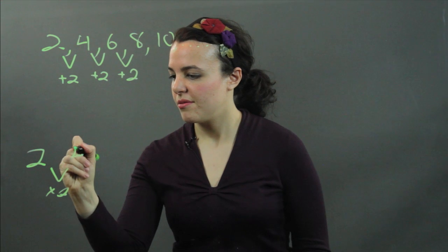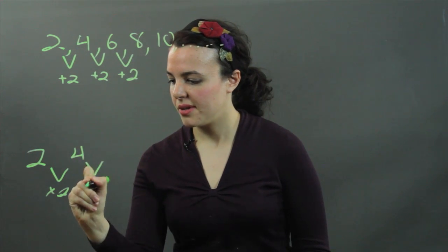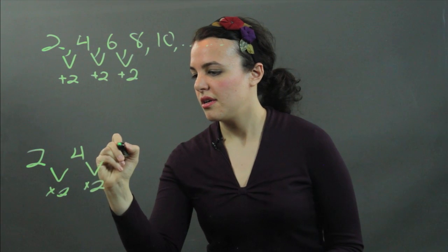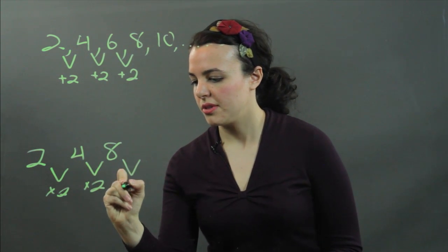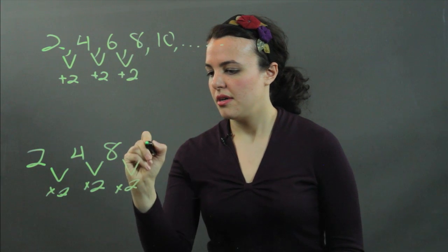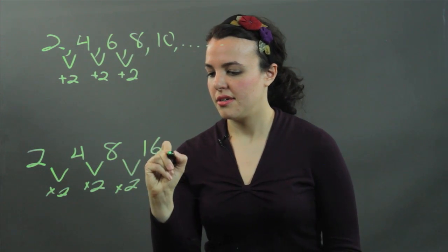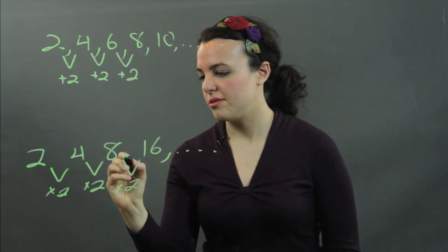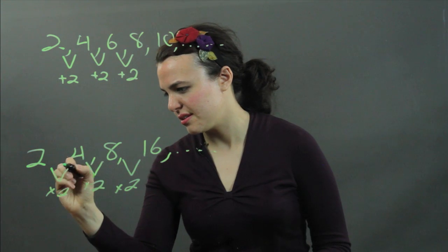And we're going to get 4, multiplied by 2 again we get 8, multiplied by 2 again we're going to get 16. And it continues. You got to have commas in between these, otherwise it's not a sequence.